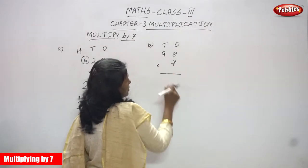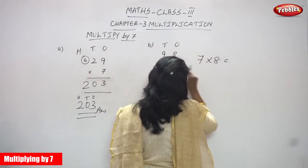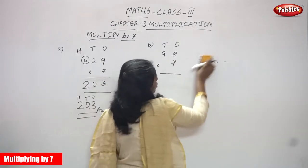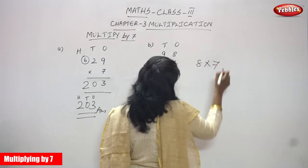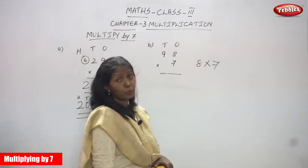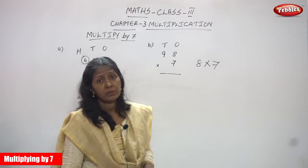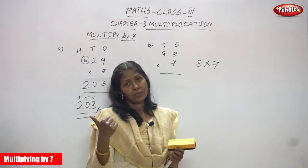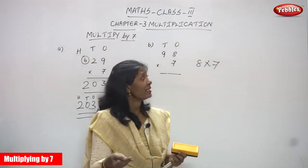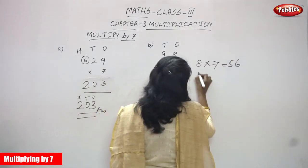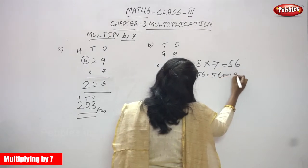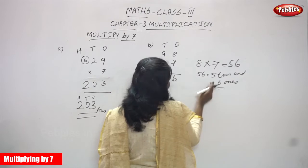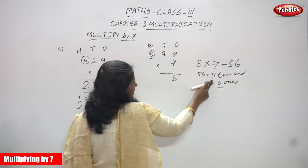I am going to multiply 8 into 7. So 8 into 7 — you must say the 7th table: 1 seven is 7, 2 sevens are 14, 3 sevens are 21, 4 sevens are 28, 5 sevens are 35, 6 sevens are 42, 7 sevens are 49, 8 sevens are 56. So the answer is 56. 56 means 5 tens and 6 ones. Write 6 in the ones place. The remaining 5 tens is a carryover — it goes to the tens place.